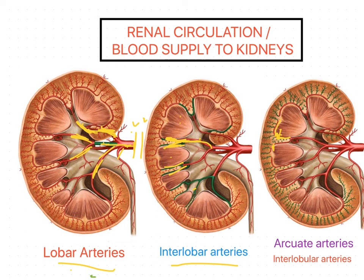At the corticomedullary junction, the interlobar arteries give another branch called the arcuate arteries, which run along the base of the pyramid at right angles to the interlobar arteries. These arcuate arteries never anastomose but give many small branches running towards the cortex, reaching the renal capsule. These small branches are called interlobular arteries.